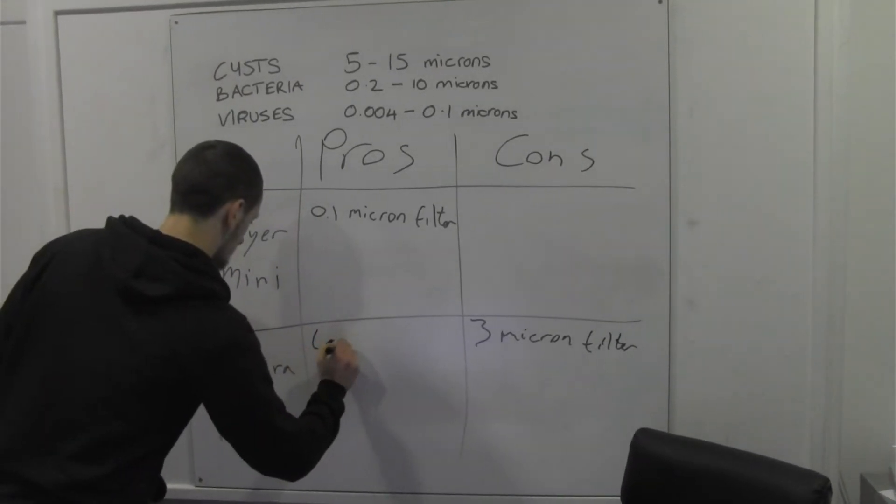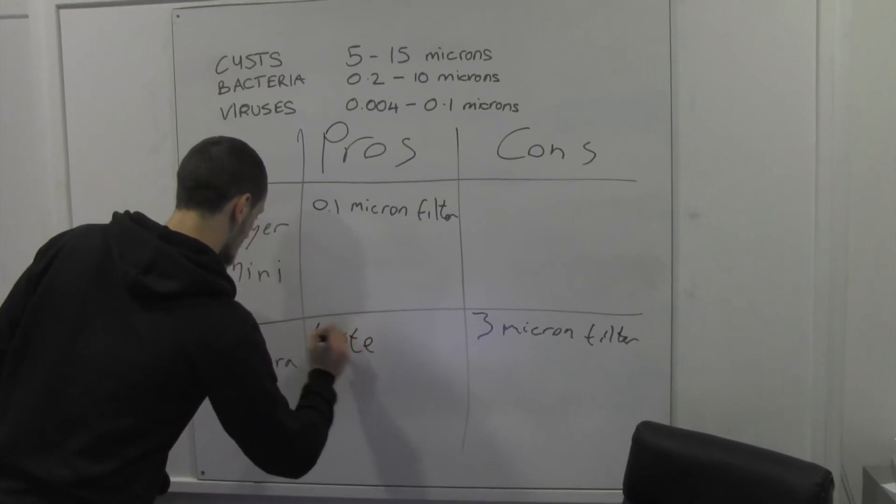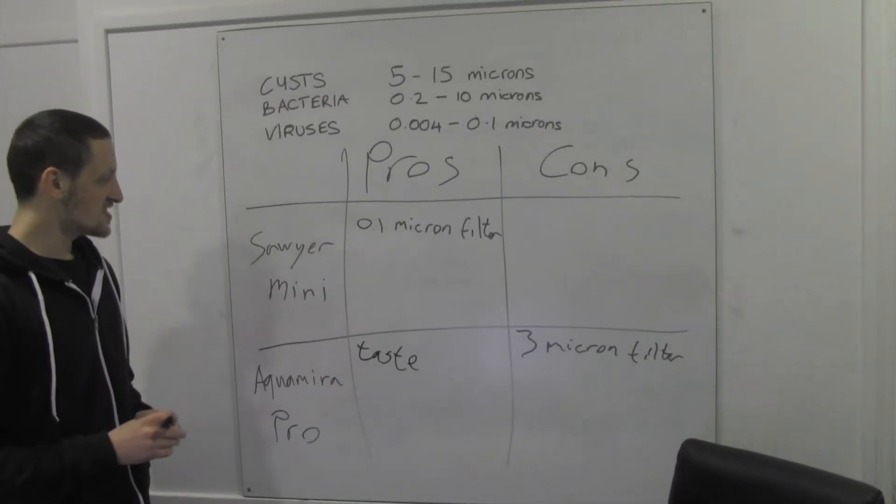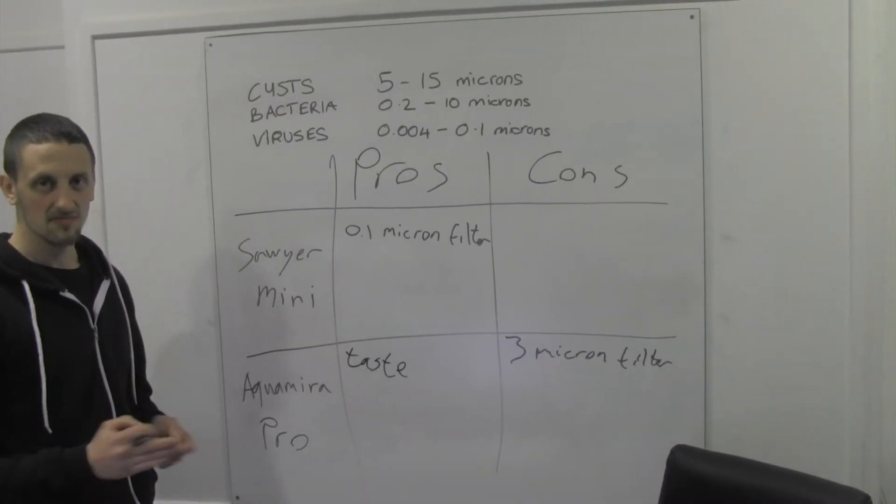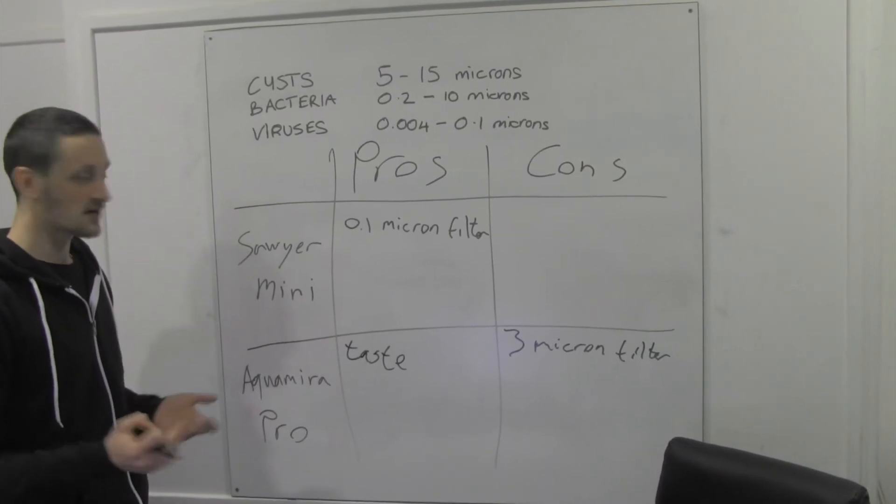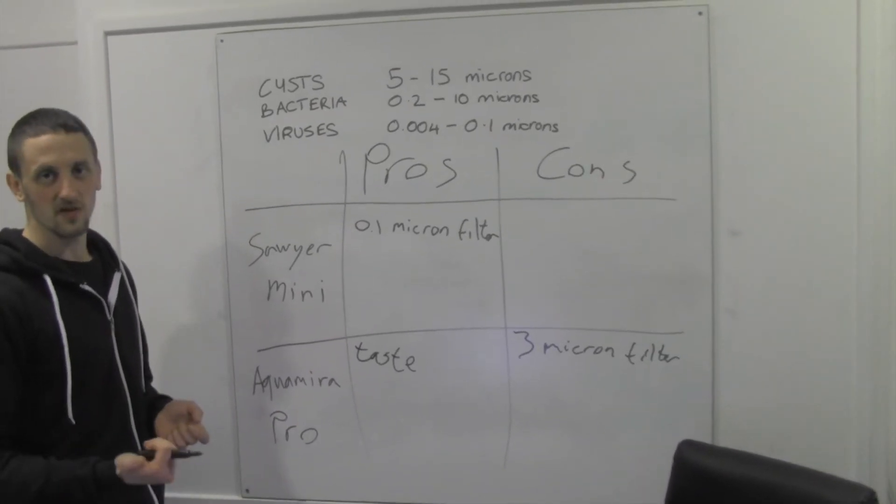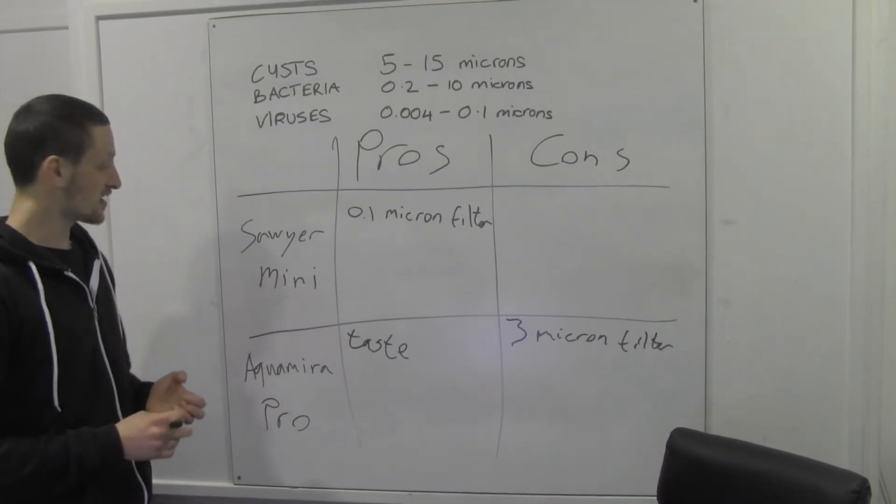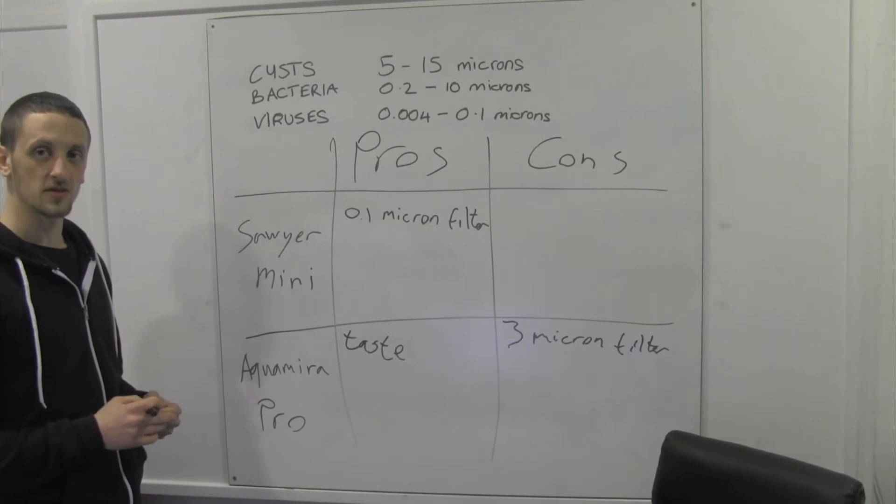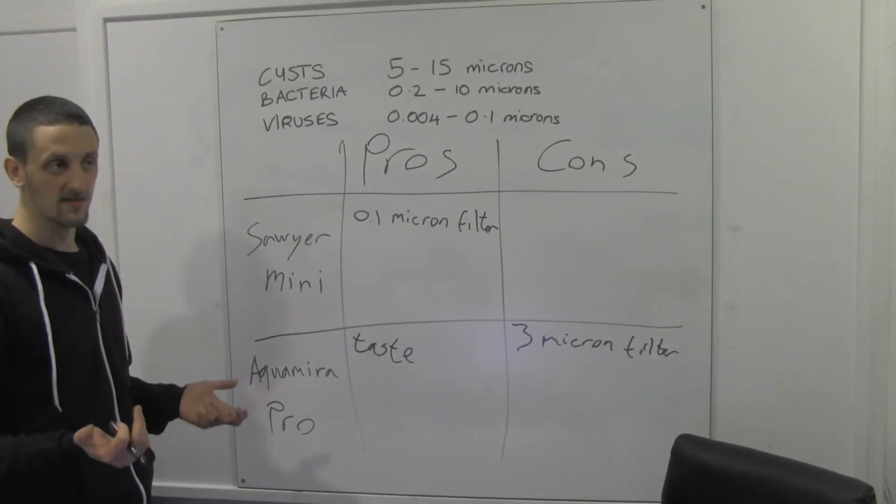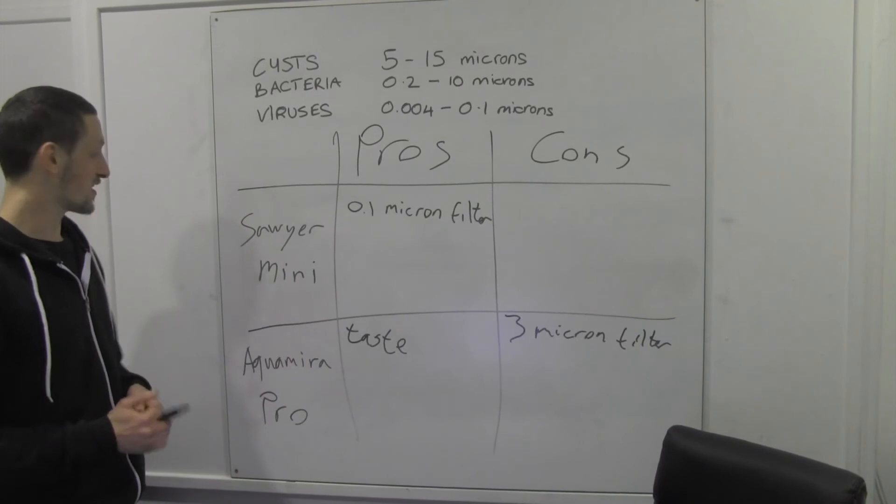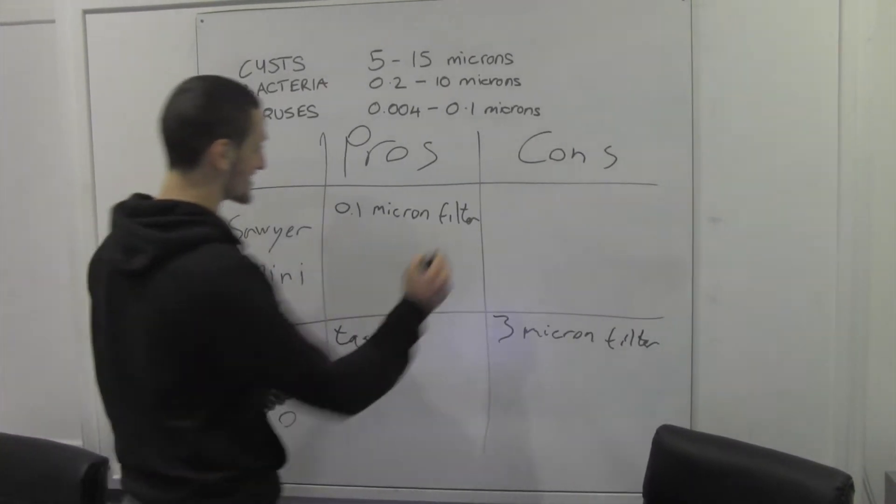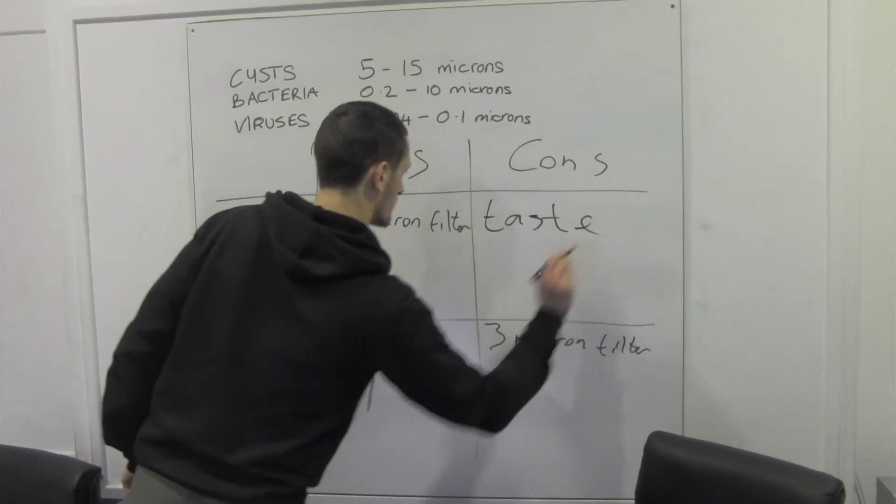Aquamira Pro. Taste. Fantastic taste. If you're out in the woods and you're out for say just a weekend for example. You're out for a weekend and you don't mind taking purification tablets or you've got a campfire, you're not on the move. Then, I'd say the Aquamira's the way it goes. It's going to give you better taste. If you've got kids, they may wince on the Sawyer Mini taste. Kids are fussy.